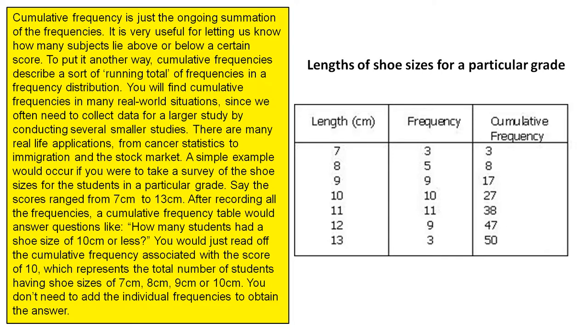Cumulative frequency is just the ongoing summation of the frequencies. It is very useful for letting us know how many subjects lie above or below a certain score.